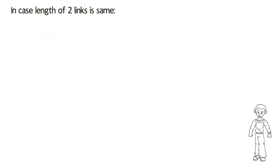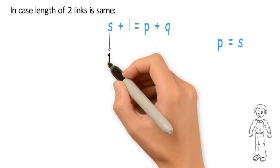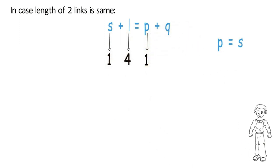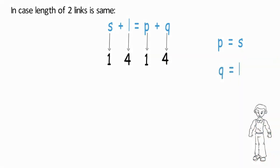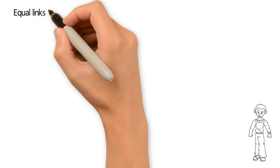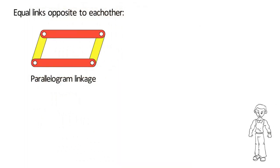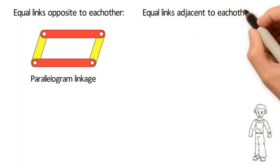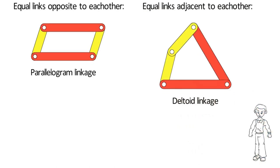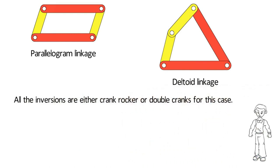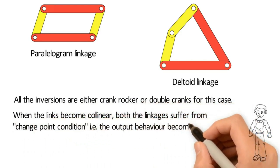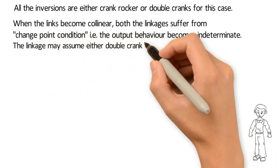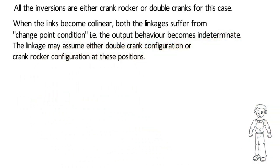In the case where the length of two links is the same — for example P equals S equals 1 unit, L equals 4 units, and Q must equal L, that is 4 units — we have two pairs of equal length links. The links can be joined in two ways: equal links opposite to each other, giving a parallelogram linkage; or equal links adjacent to each other, giving a deltoid linkage. All inversions are either crank-rocker or double crank for this case. When the links become collinear, both linkages suffer from the change point condition, meaning the output behavior becomes indeterminate, as the linkage may assume either a double crank or crank-rocker configuration at these positions, which is unpredictable.